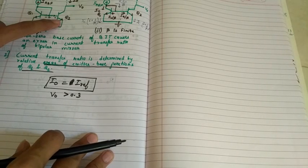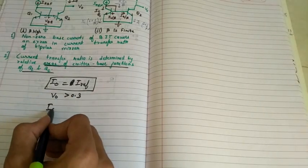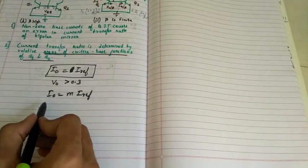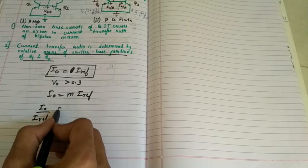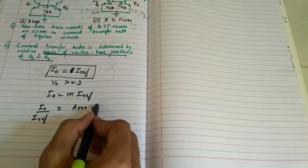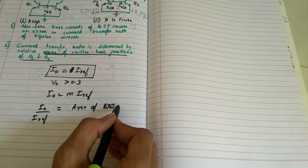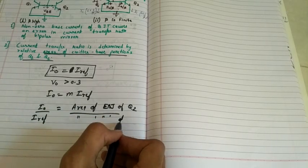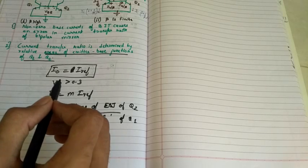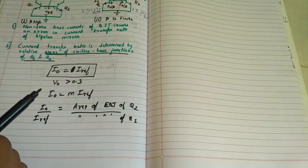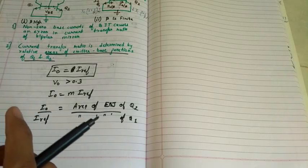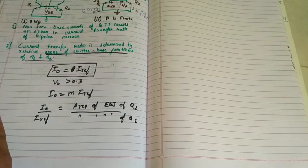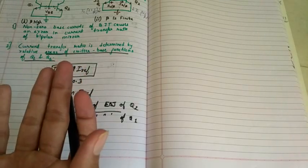Let's say we have to adjust the ratio as I0 equals M times I-reference. For this, we will do I0 by I-reference. Since it is depending on area, we can say it is area of emitter-base junction of Q2 divided by area of emitter-base junction of Q1.